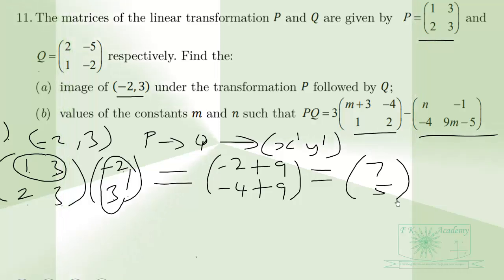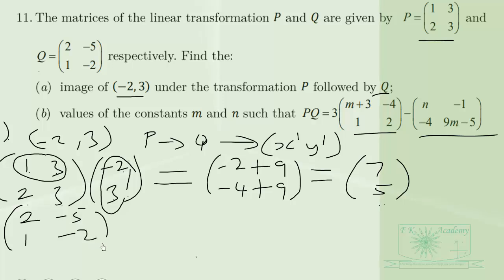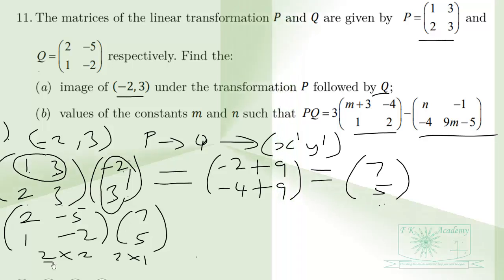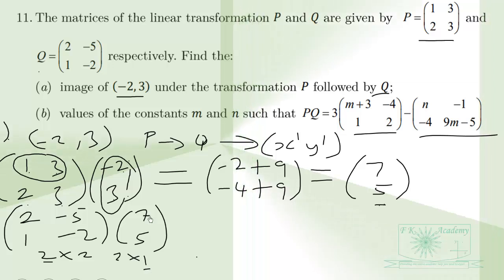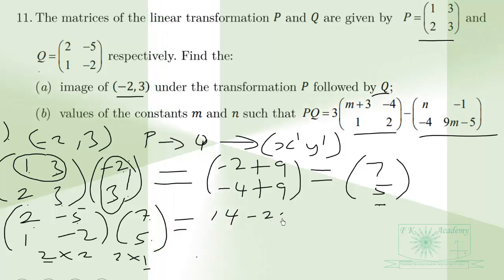We now transform [7, 5] under Q. So we have Q = [[2, -5], [1, -2]] multiplying the 2×1 matrix [7, 5], giving a 2×1 result. Row by column: 2 times 7 is 14, and -5 times 5 is -25.